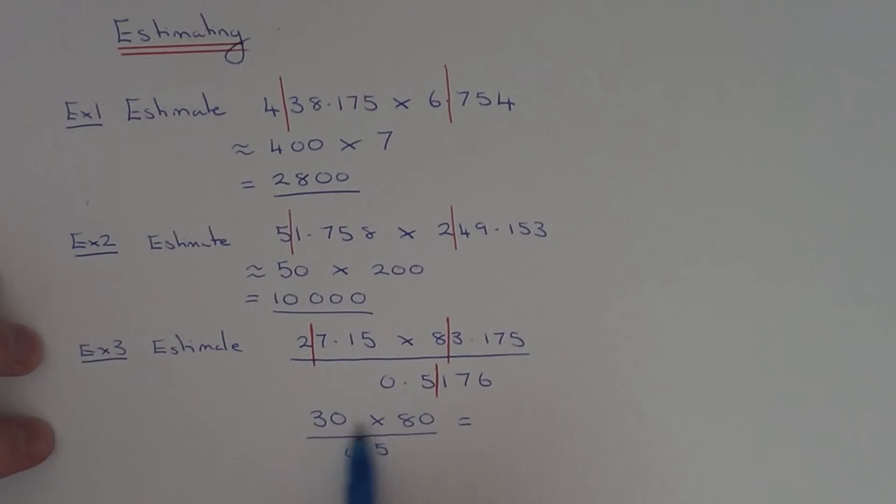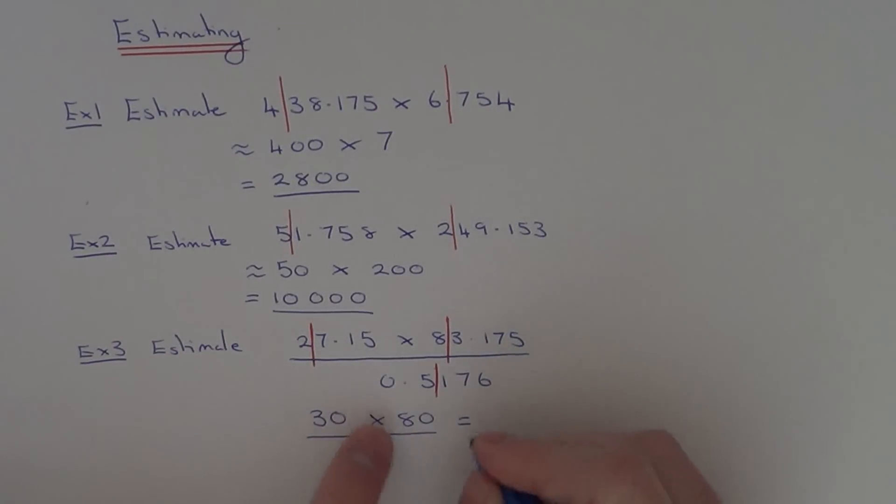So if you work out the numerator, 30 times 80 is 24, plus your two zeros is 2400. And then we've got to divide that by 0.5.